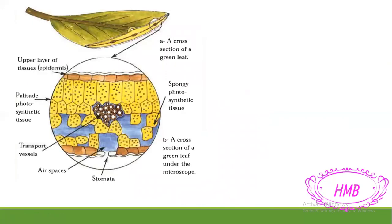Now we are going to study the structure of one organ in the plant, which is the green leaf. We made two sections of the leaf: the first is the complete leaf, and the second is when we put one small piece under the microscope to study what we have inside — how this leaf looks from the inside. As you can see, this is the picture under the microscope, and all of these colorful structures are parts found in the leaf, only seen by microscope.